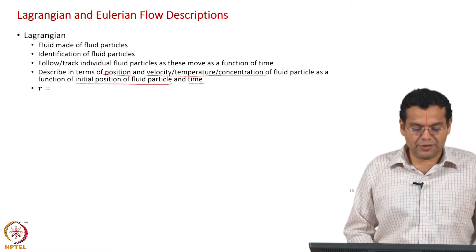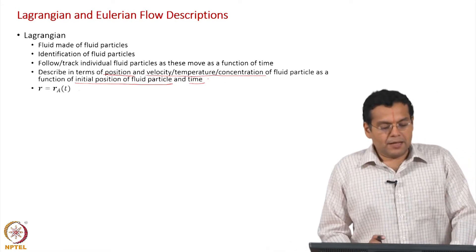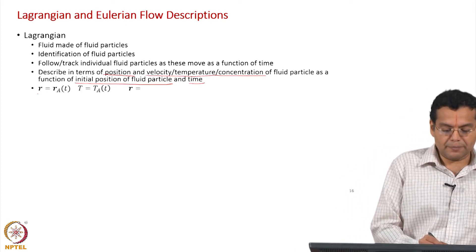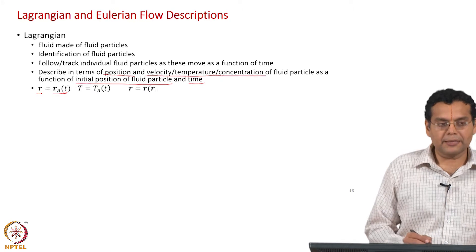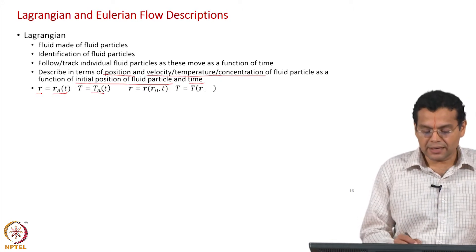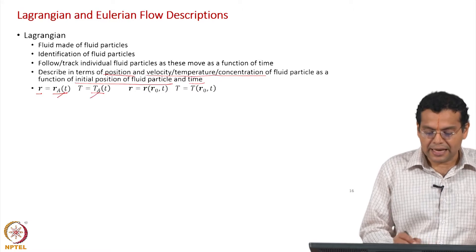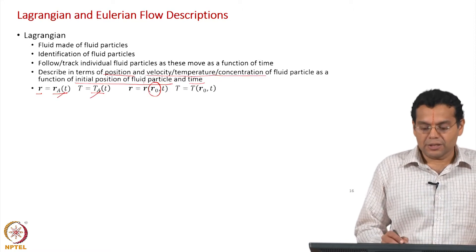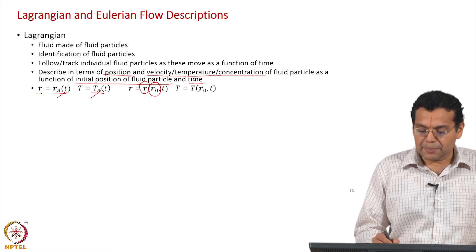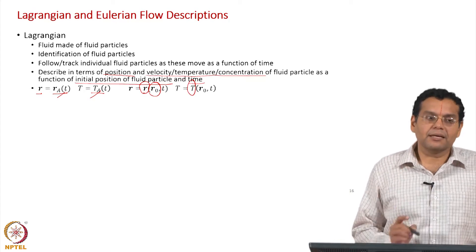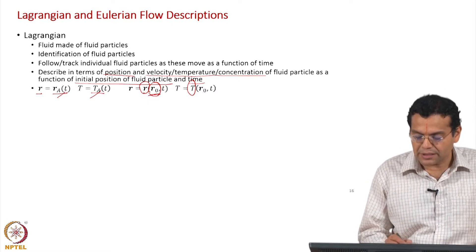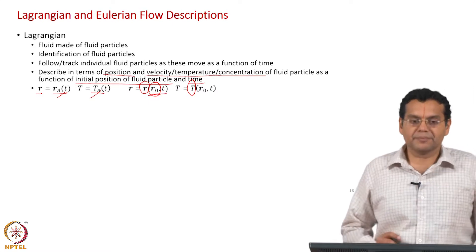In terms of expressions, for a particular particle, position and temperature are the dependent variables — instead of labeling a particle 'A', we use its initial position r-naught. So the position of the particle and the temperature of the particle are the dependent variables, while the independent variables are initial position and time.